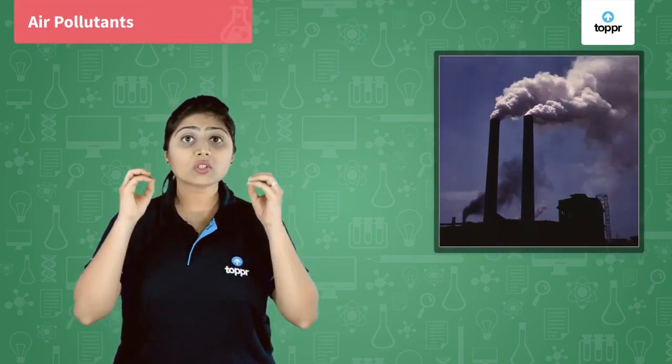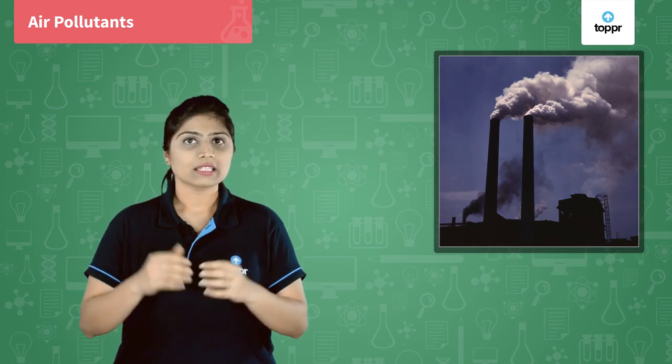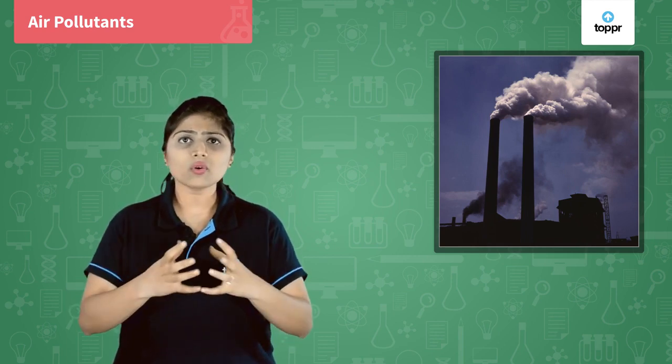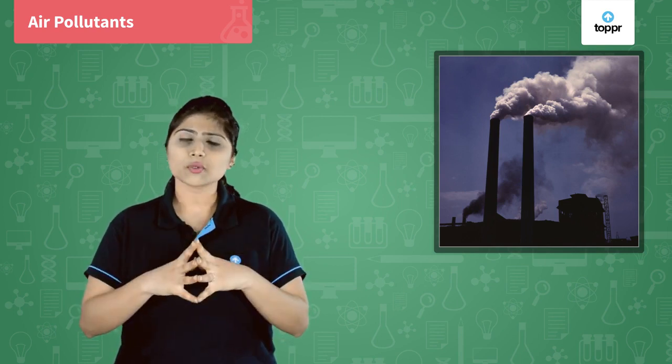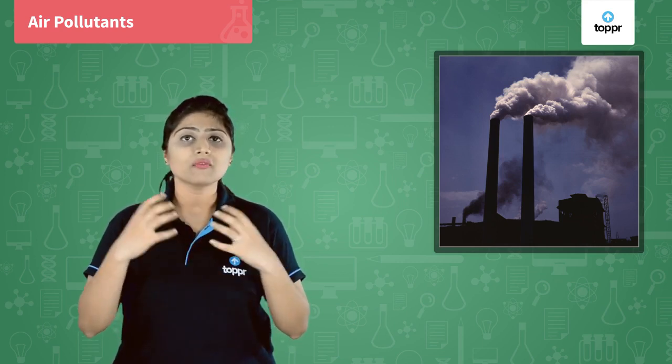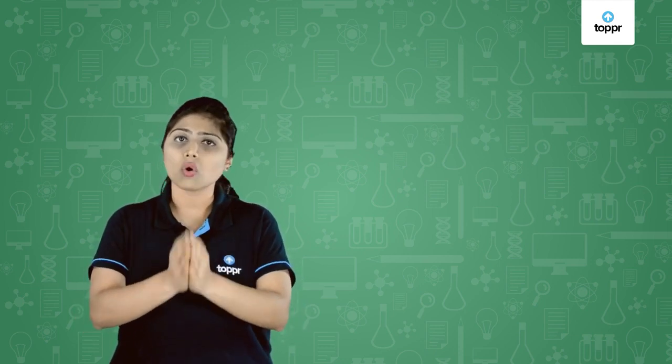Apart from vehicles, most industries are also a major cause of air pollution. Sulfur dioxide and nitrogen dioxide are toxic gases majorly emitted by oil refineries. Sulfur dioxide is also emitted when fuels like coal are burned in power plants. These oxides are so dangerous that they cause respiratory problems and can even cause permanent lung damage. Burning fossil fuels also causes a lot of air pollution.